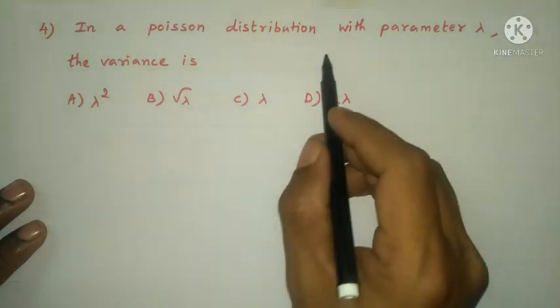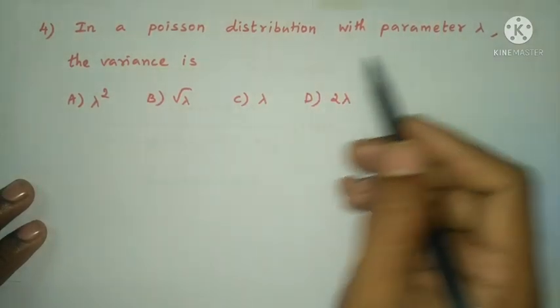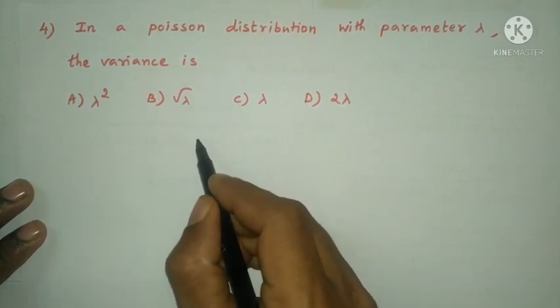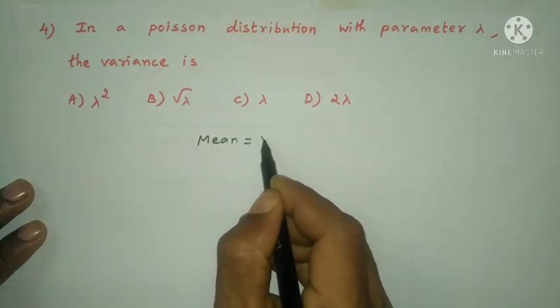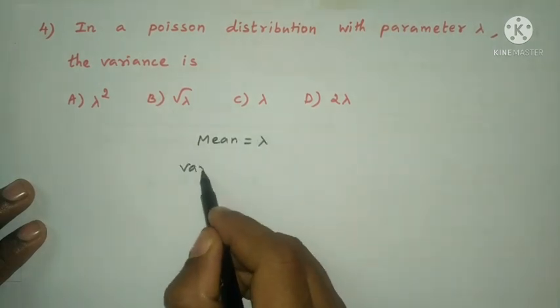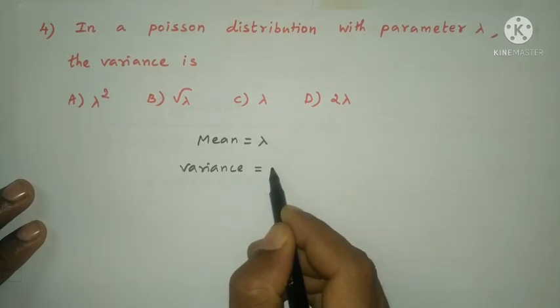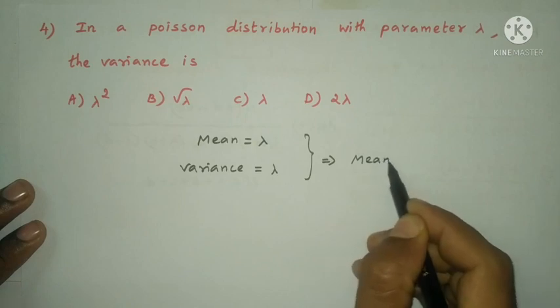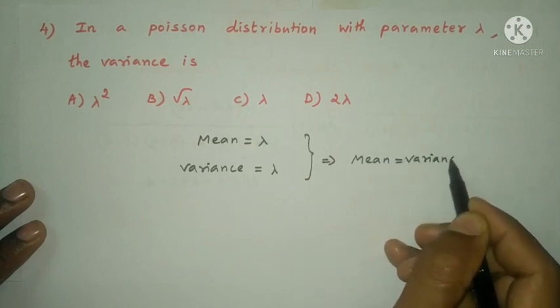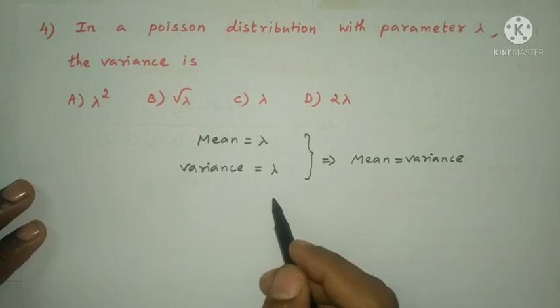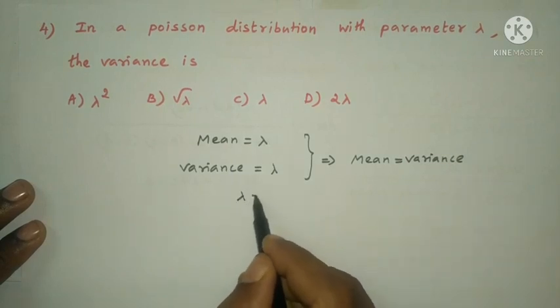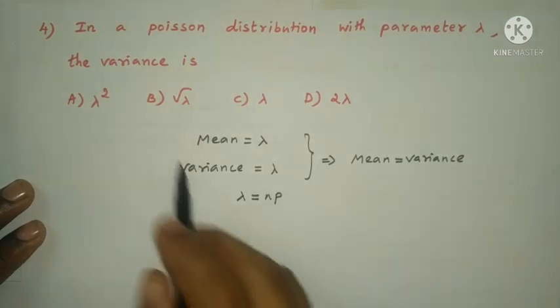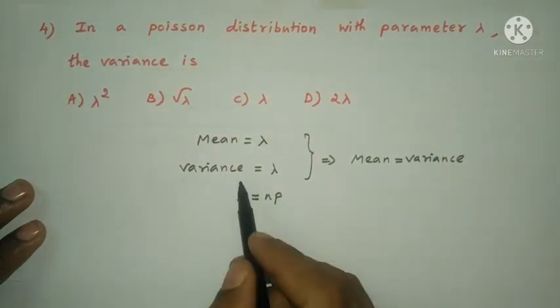Next question: In a Poisson distribution with parameter lambda, the variance is. For Poisson distribution, mean and variance are both equal, which is equal to lambda. Lambda is the parameter. So variance is lambda.